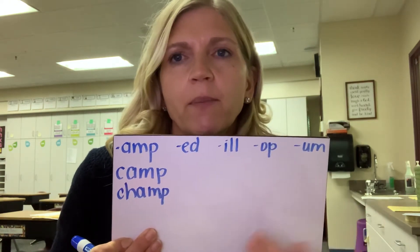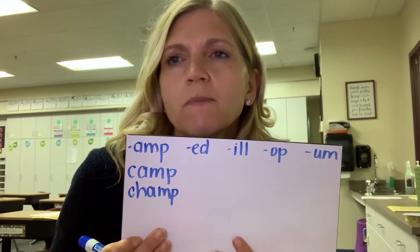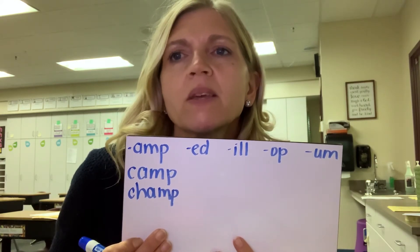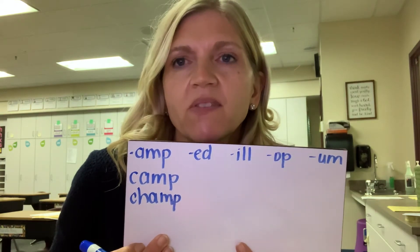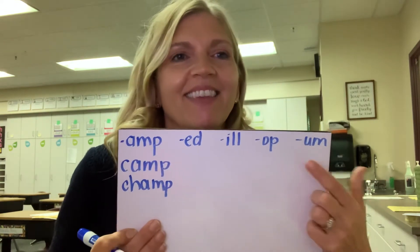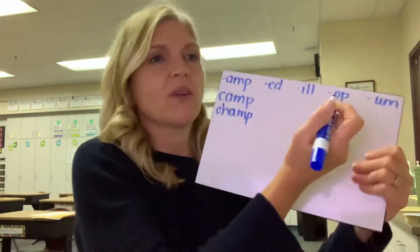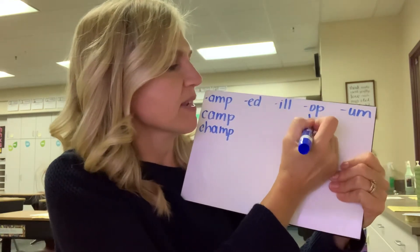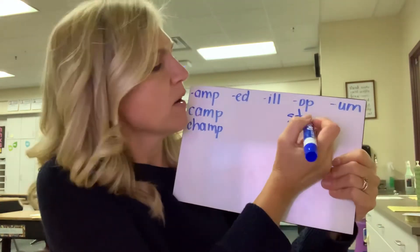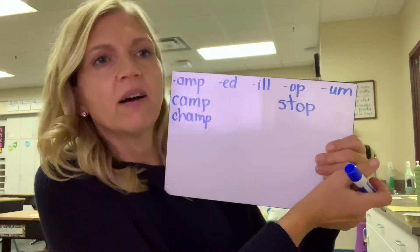Let's move to a new word family. Let's do the word stop. Where would you put the word stop? That's right, in the O-P column. So let's write the word stop. S-T is the blend, then O-P. Op. These are all OP words.